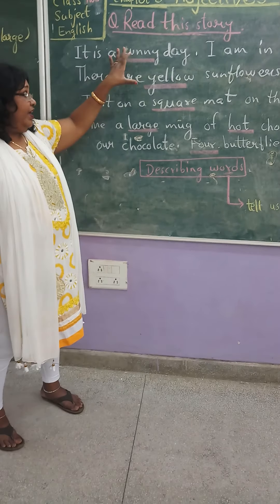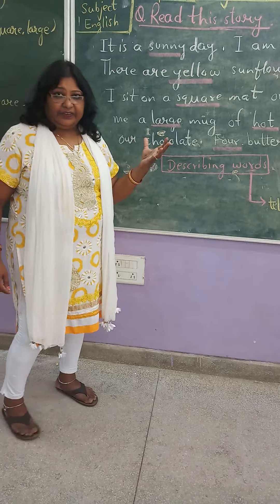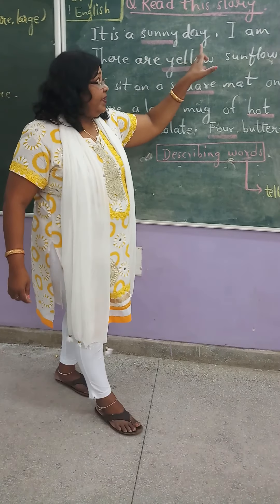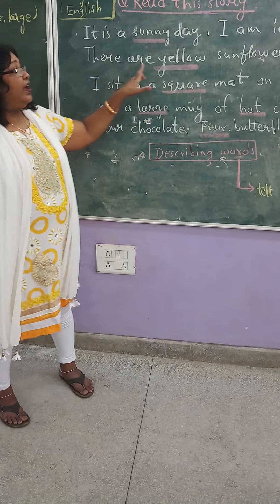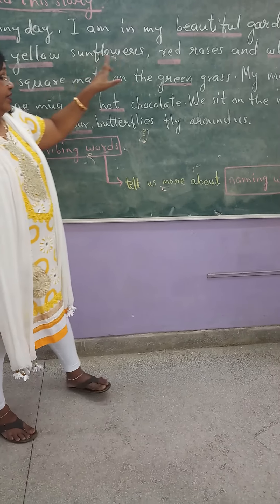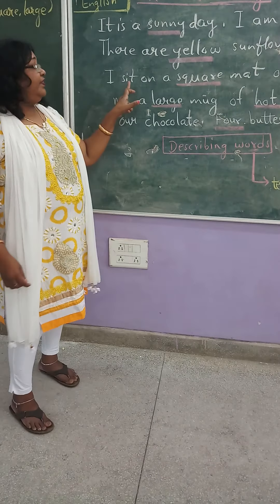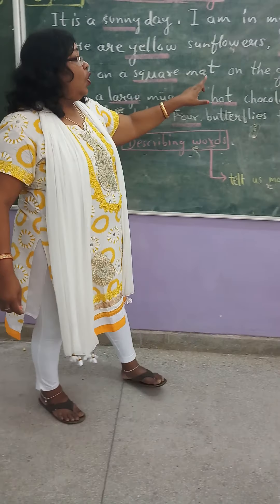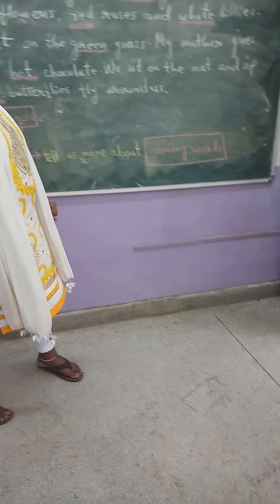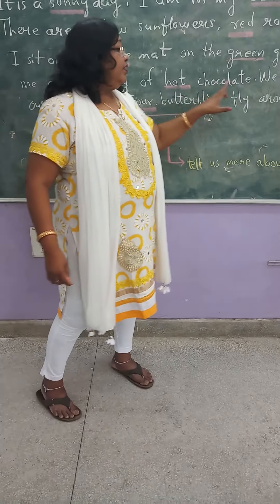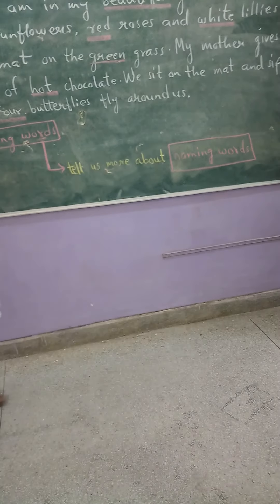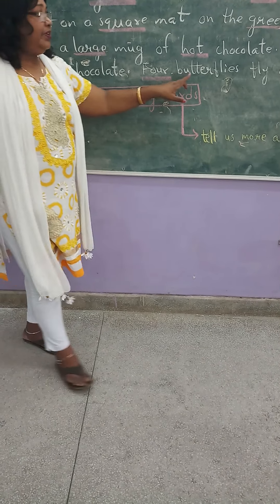Read this story. I have written one story for you. It is a very short story. It is a sunny day. I am in my beautiful garden. There are little sunflowers, red roses and white lilies. I sit on a square mat on the green grass. My mother gives me a large mug of hot chocolate. We sit on the mat and sip our chocolate. Four butterflies fly around us.